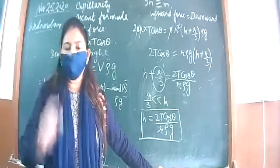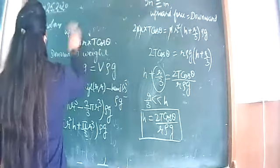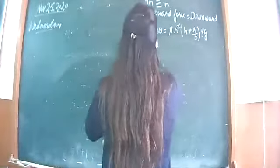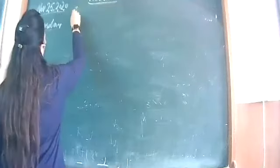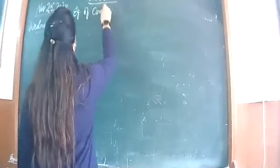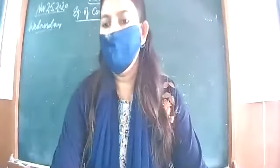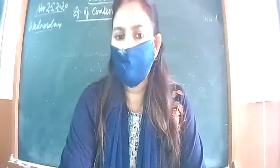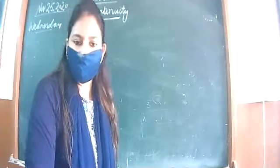Let us now revise the equation of continuity, and after that Bernoulli's theorem. Who will tell me the statement? A student answers: the product of the area of cross section of a liquid and the velocity of the liquid is constant. Yes — AV is a constant. Very good.